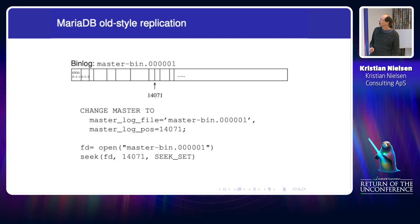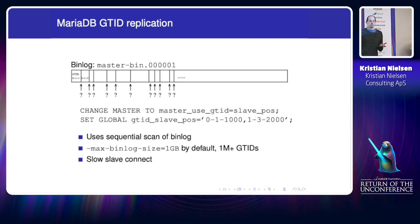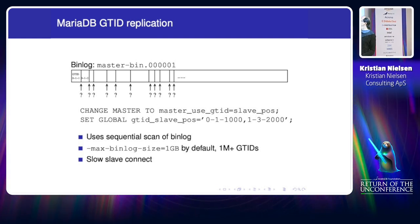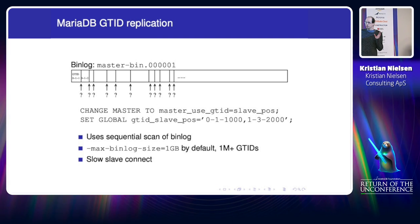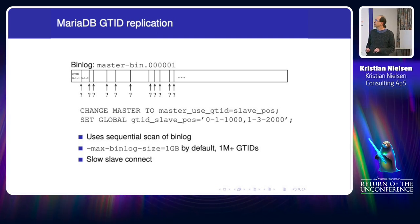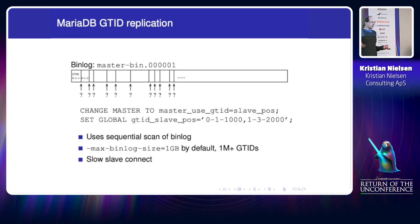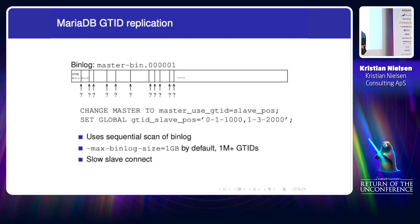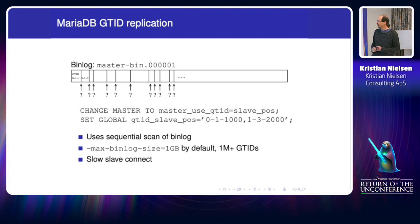Then we implemented global transaction ID. A GTID is an identifier not directly related to a position on the master, and it can correspond to multiple positions — related to multi-source replication and so on. So how do we find the place to start? The easy answer is: we start from the beginning of the file and scan until we find the right position, and that's how it was first implemented so we could ship a release.